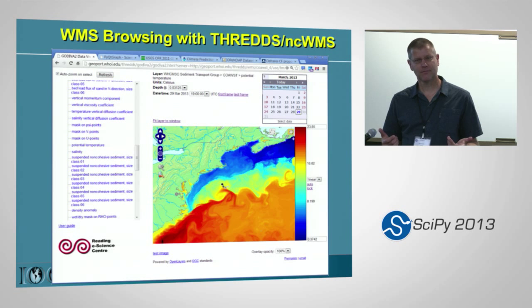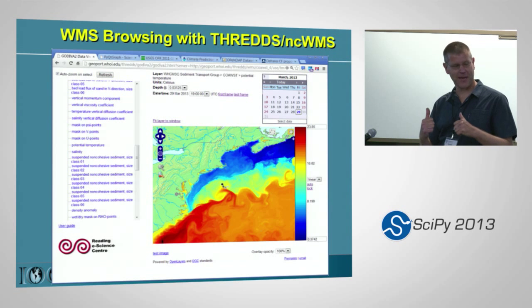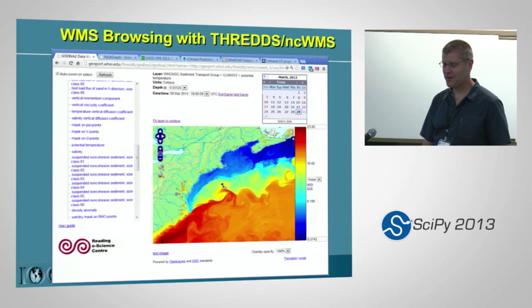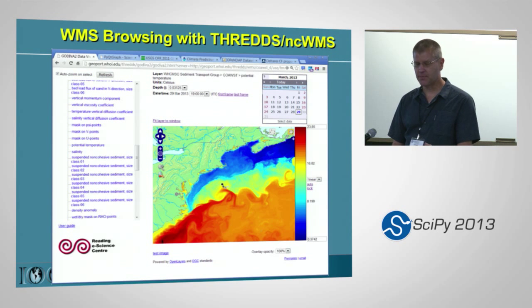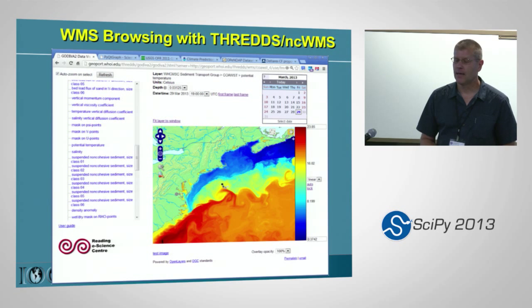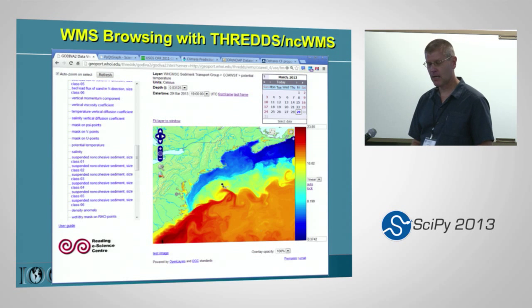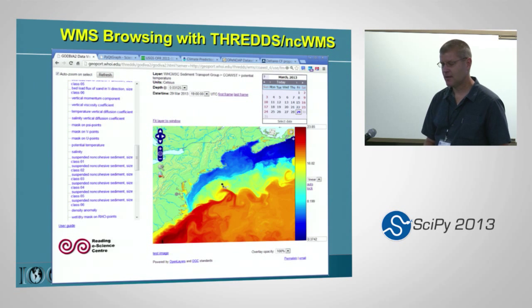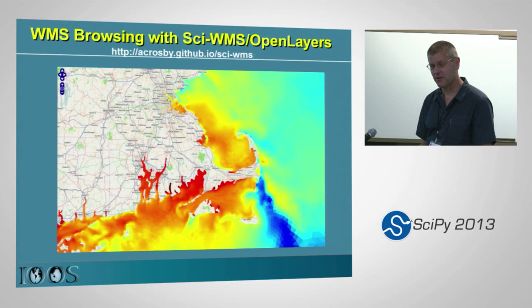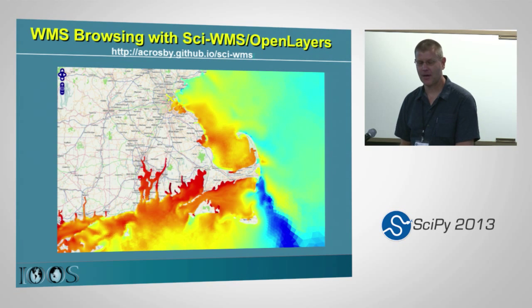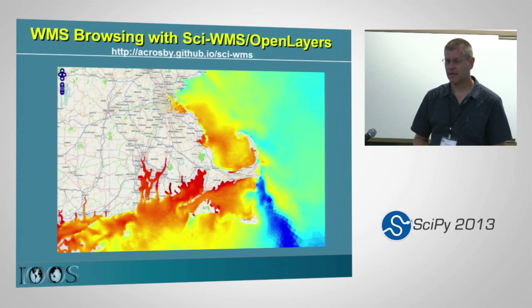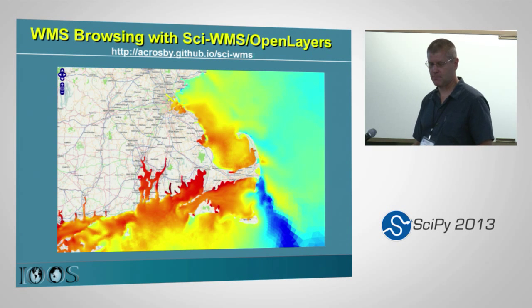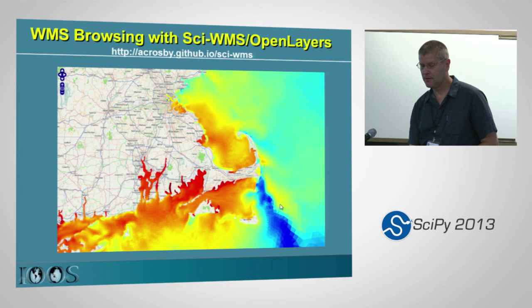We also want browsing — it's nice to be able to browse as well as get the data. There's browsing built in with THREDDS: NCWMS works for structured grids but doesn't work for unstructured grids. For unstructured grids, if you were here yesterday you heard Alex talk about ncWMS — actually CyWMS — which is a Python service. Here we're looking at it in OpenLayers; you can see the little triangles showing the unstructured grid data.